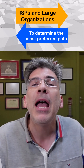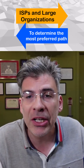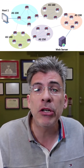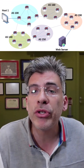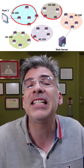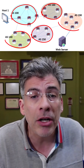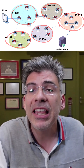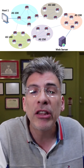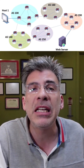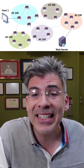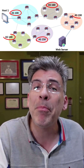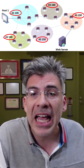BGP uses a whole series of parameters and groups internet routers into large entities called autonomous systems, or ASes, that are administered by large-scale ISPs. Each AS is identified by a unique AS number. BGP routes data from AS to AS until it gets to the AS of the intended destination.